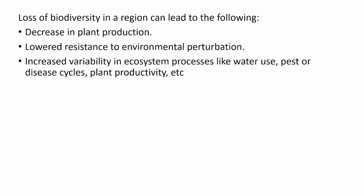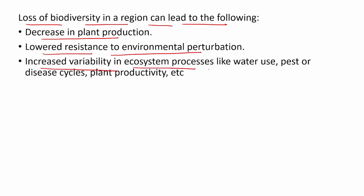Now, if we see how the loss of biodiversity in a region occurs, what are the impacts? Loss of biodiversity in a region can lead to the following: decrease in plant production, lowered resistance to environmental perturbation, and increased variability in ecosystem processes like water use, pest or disease cycle.